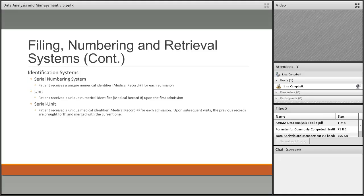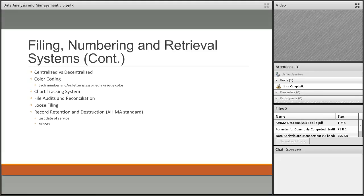Serial-unit numbering is when a patient receives a new number every single time they're admitted — much like serial — however, the old records are brought forward and attached to that new record so all previous information is available for the physician. That is called serial-unit.